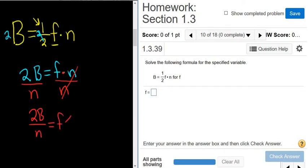You can write this the other way. You can write it as f equals 2B over n. And that's the final answer.